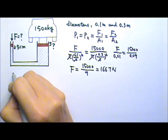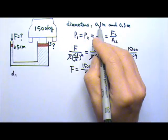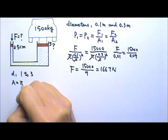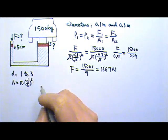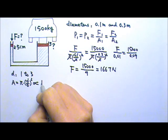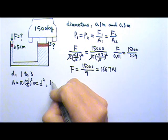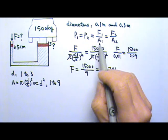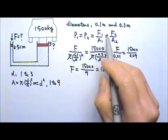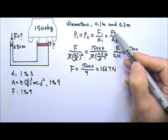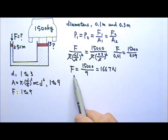Another way to look at this: the diameter ratio of the two pistons is 1 to 3. That means the area, which is proportional to d squared, would be in a ratio of 1 to 9. Since force divided by area has to be the same on both sides, the force must also be in a ratio of 1 to 9 — because 1 divided by 1 equals 9 divided by 9. So the applied force must be one ninth of the larger force on the other side.